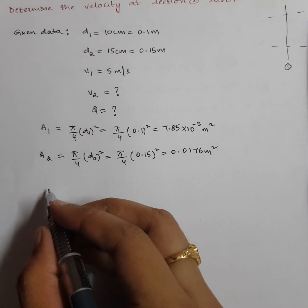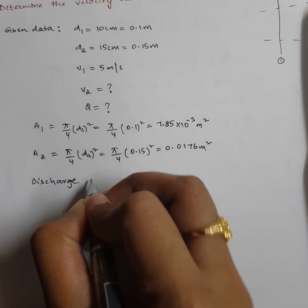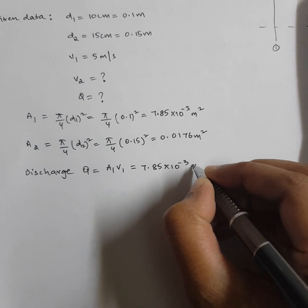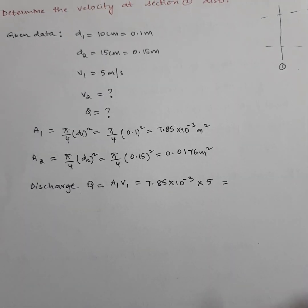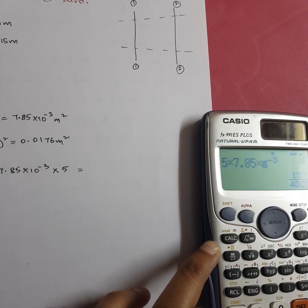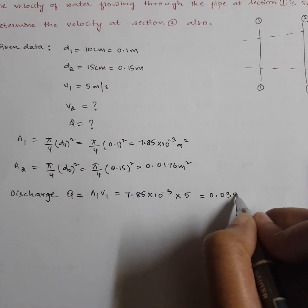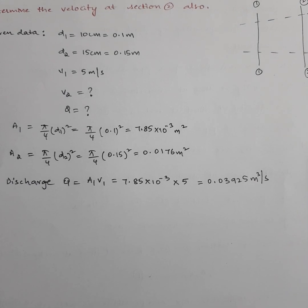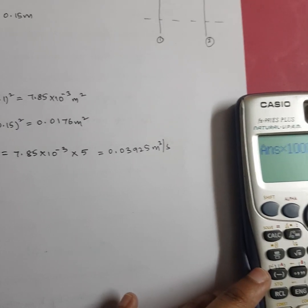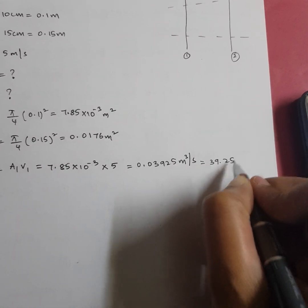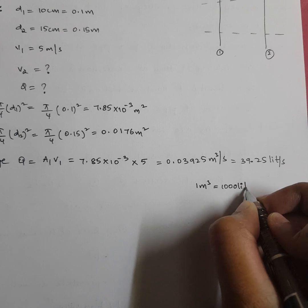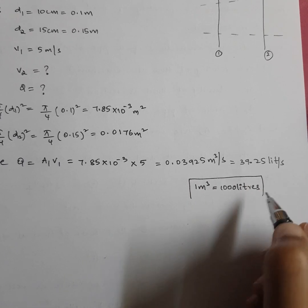Now calculate discharge Q equals A1 times V1 equals 7.85 times 10 to the power of minus 3 times 5, which equals 0.03925 cubic meters per second. Since 1 cubic meter per second equals 1000 liters, this can also be written as 39.25 liters per second.